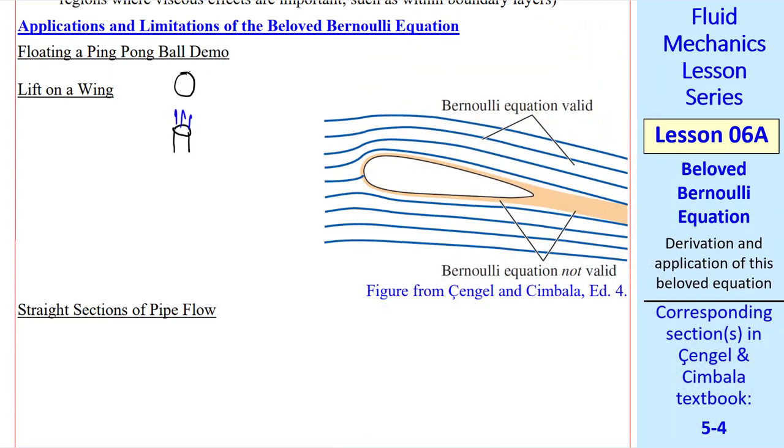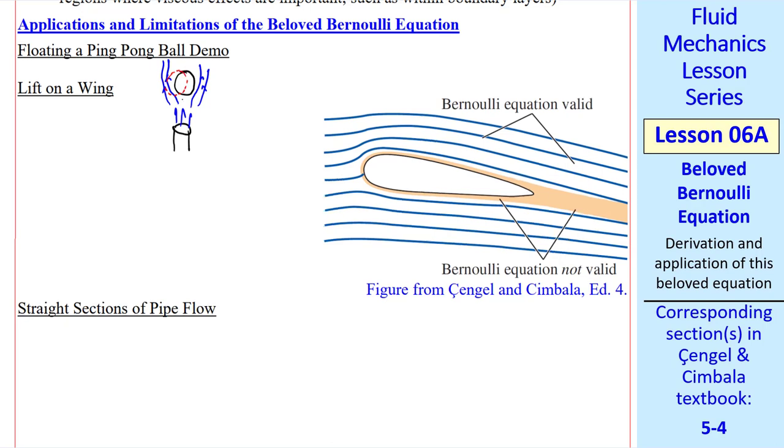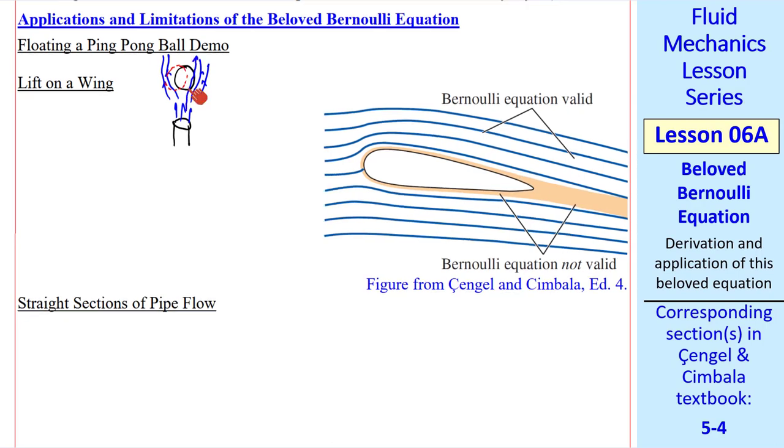How does the ball stay there? Well, here are some streamlines. If the ball shifts a little bit to the left, the flow will no longer be symmetric, and the flow on the right side will be at a higher speed than the flow on the left side, since more of the air is blowing on the right side.